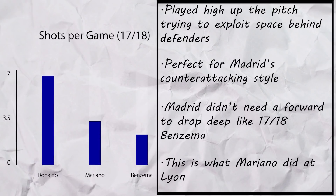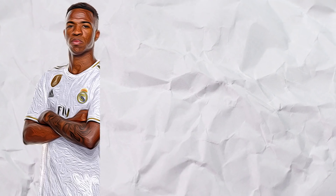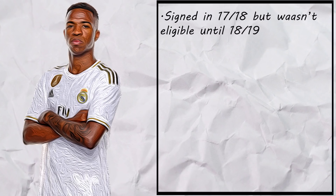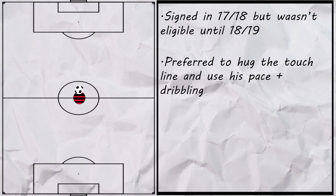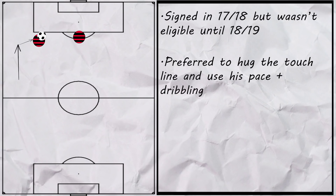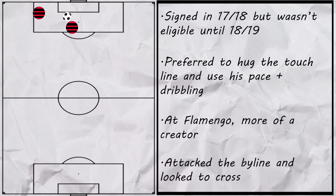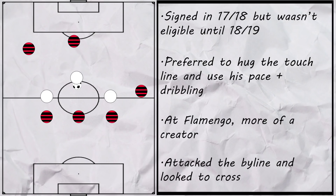It made sense — at Lyon he was averaging a respectable 3.03 shots per game. Vinicius was the other attacking signing. He was signed a season earlier but it didn't become official until last season. Vinicius was more like the earlier version of Ronaldo, liking to hug the left wing before using his pace and dribbling when moving up the pitch and attacking the box. Unlike Ronaldo, he's more of a creator than a scorer, attacking the byline to provide the assist more often, and when the team was defending, he was willing to drop deep.